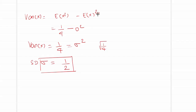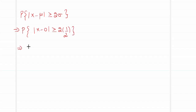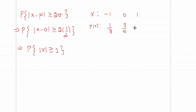Now we apply these values to the required probability. P(|X − μ| ≥ 2σ) = P(|X − 0| ≥ 2 × 1/2) = P(|X| ≥ 1). So we need to estimate P(|X| ≥ 1), given that X takes values minus 1, 0, and 1 with probabilities 1/8, 3/4, and 1/8.